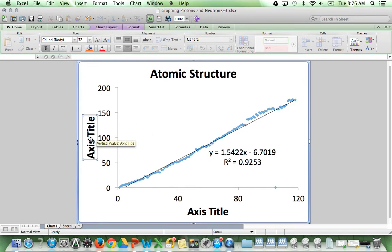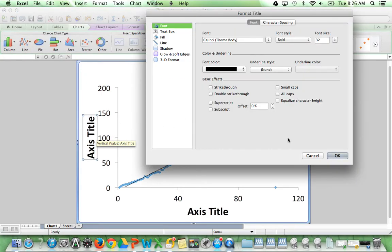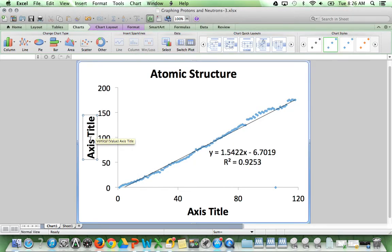Last but not least, I need to change my axis titles. I just need to delete the information here. This needs to be neutrons. And we should have protons here.